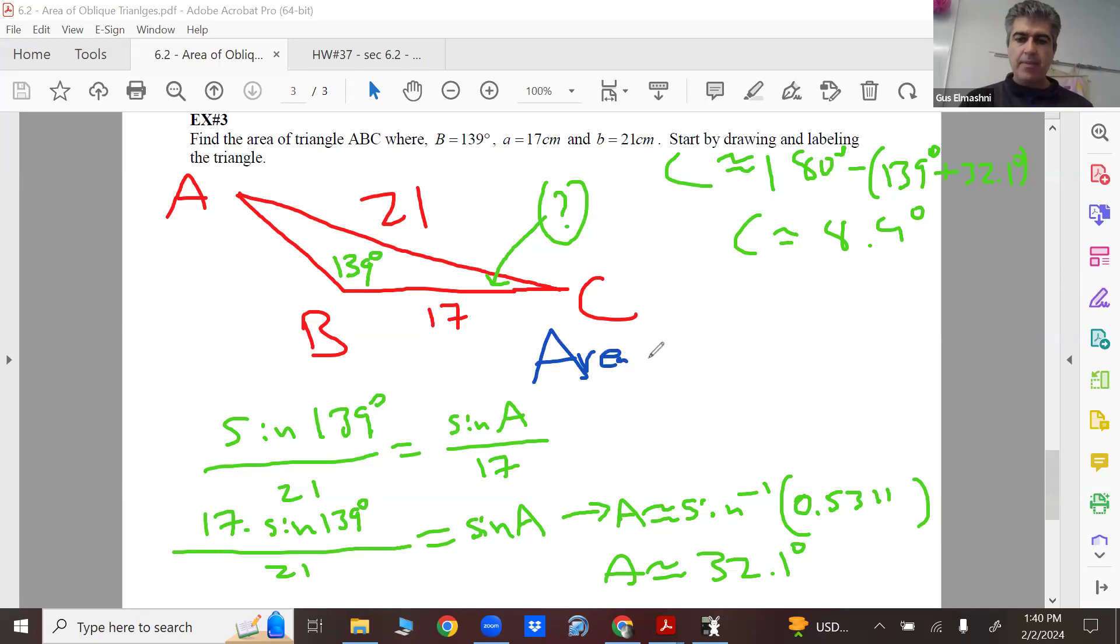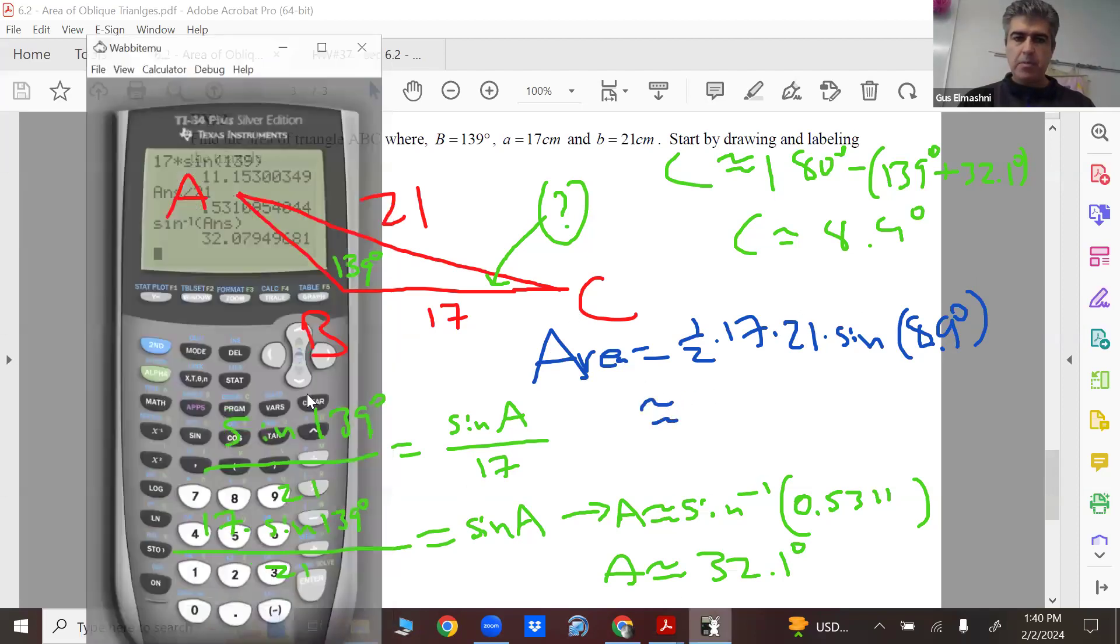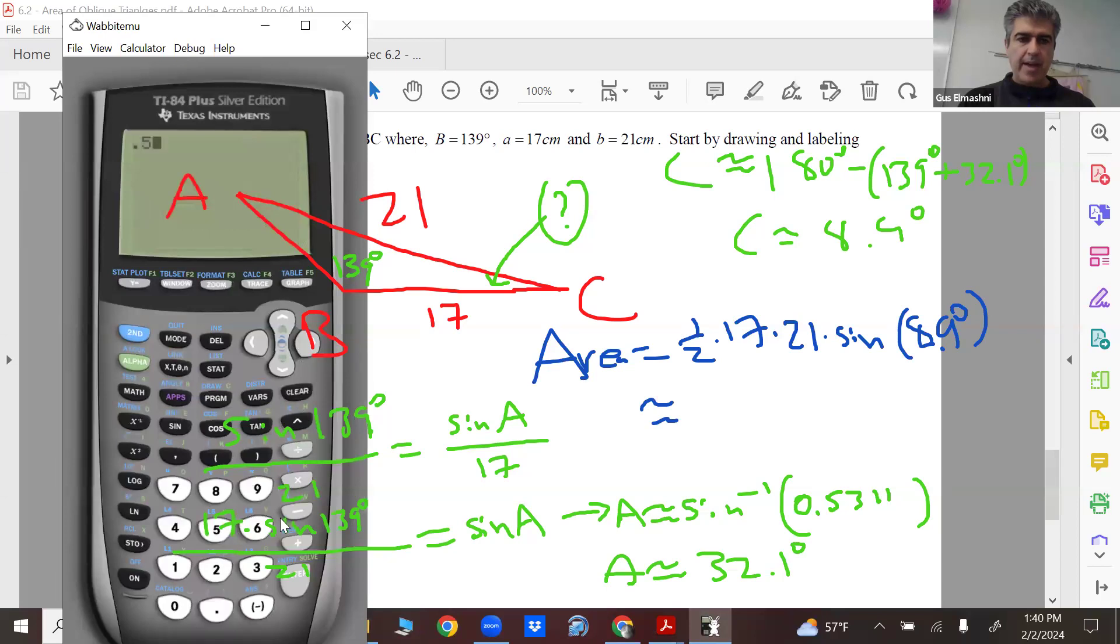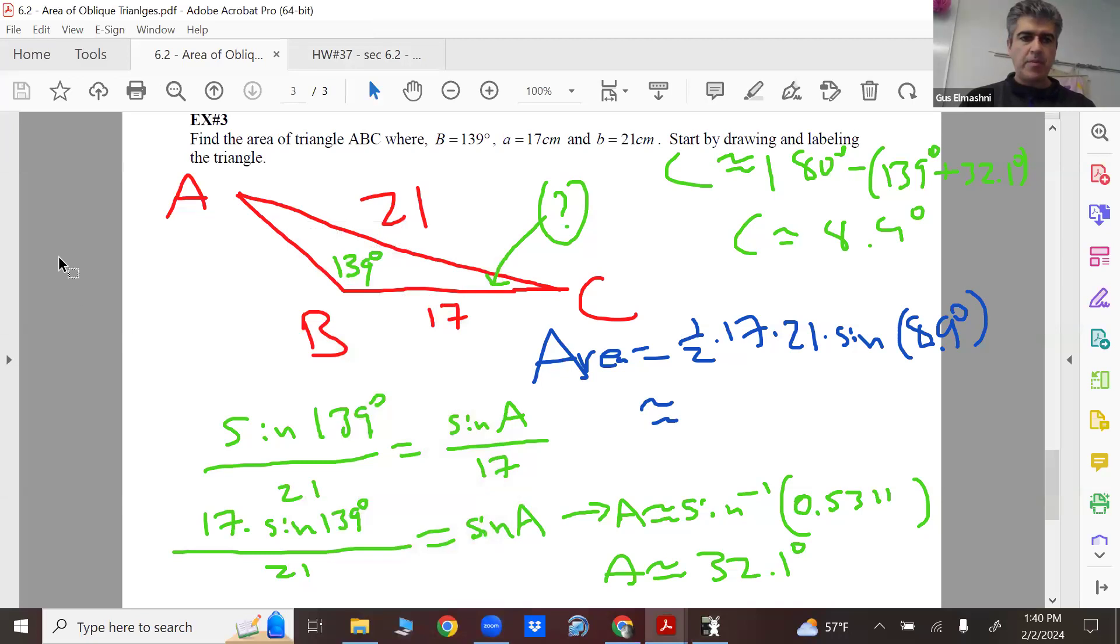And now I can actually find my area. My area is going to be one half times 17 times 21 times sine, not cosine, of 8.9 degrees, and that will give me the area of the triangle. And that will be it. So 0.5 times 17 times 21 times sine 8.9. 27.6 square root. And boom, there you go. There's your area.